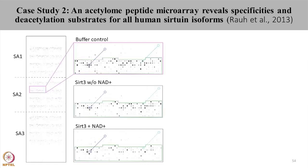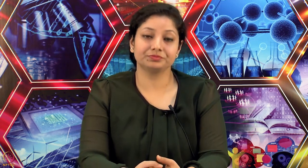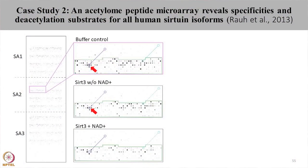In the experimental design, each assay represents a sub-array. Sub-arrays were treated with buffer control without sirtuins, sirtuins without NAD, and sirtuins with NAD. Since sirtuins require NAD for activity, no deacetylation should occur without NAD. No change in signal was seen in the buffer control or in sirtuin treatment without NAD. However, a loss in signal intensity was seen when arrays were treated with sirtuins in the presence of NAD, confirming that sirtuins need NAD for deacetylation and that deacetylation is occurring on the array.